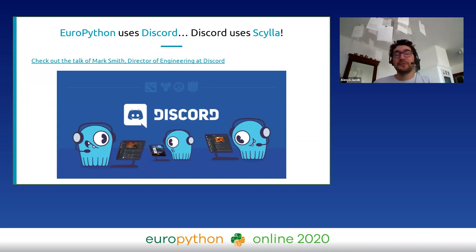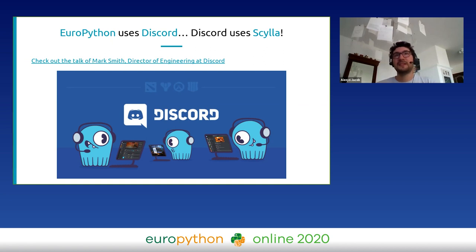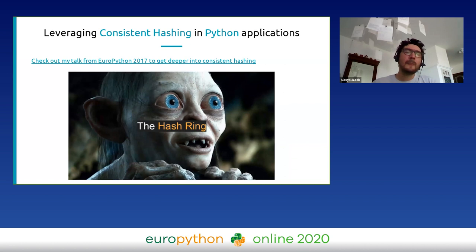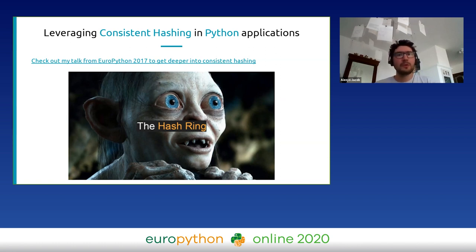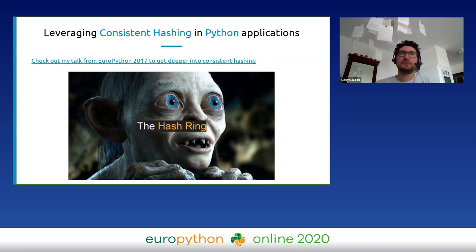Before starting, since EuroPython is using Discord, it's interesting to note that Discord uses Scylla as well. Check out the link where Mark Smith introduces how Discord uses Scylla. This is an advanced talk, so familiarity with consistent hashing and Cassandra is assumed — though a previous EuroPython talk on consistent hashing is also recommended if needed.